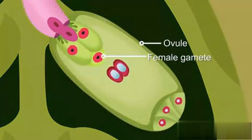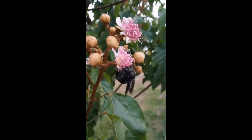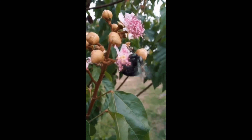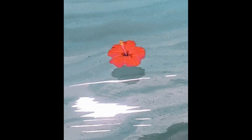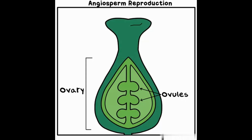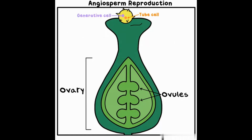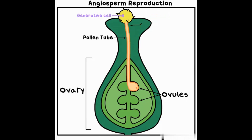Pollination is the transfer of pollen from the anther of one flower to the stigma of another flower (cross-pollination), or to the stigma of the same flower (self-pollination). Pollination can occur through various agents such as wind, water, insects, birds, or mammals. Once pollen lands on the stigma, it germinates, forming a pollen tube that grows down through the style towards the ovary.